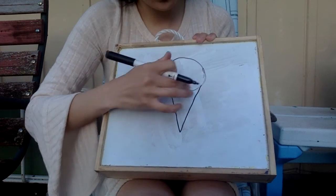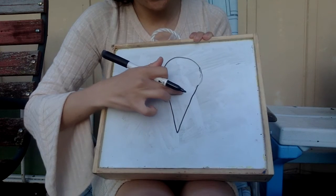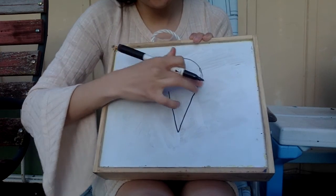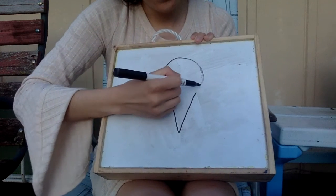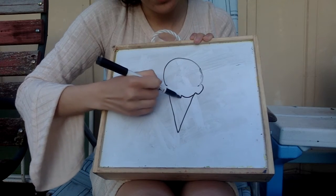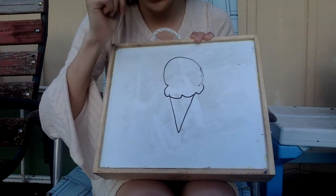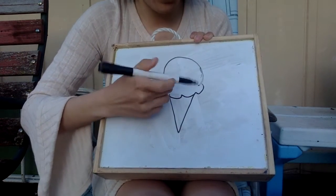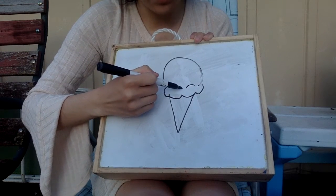The first thing I want to do is erase this line, and I'm going to give my ice cream some of these little bumps. Those bumps make it look like it's ice cream sitting right on top, plopped right on top of that cone.